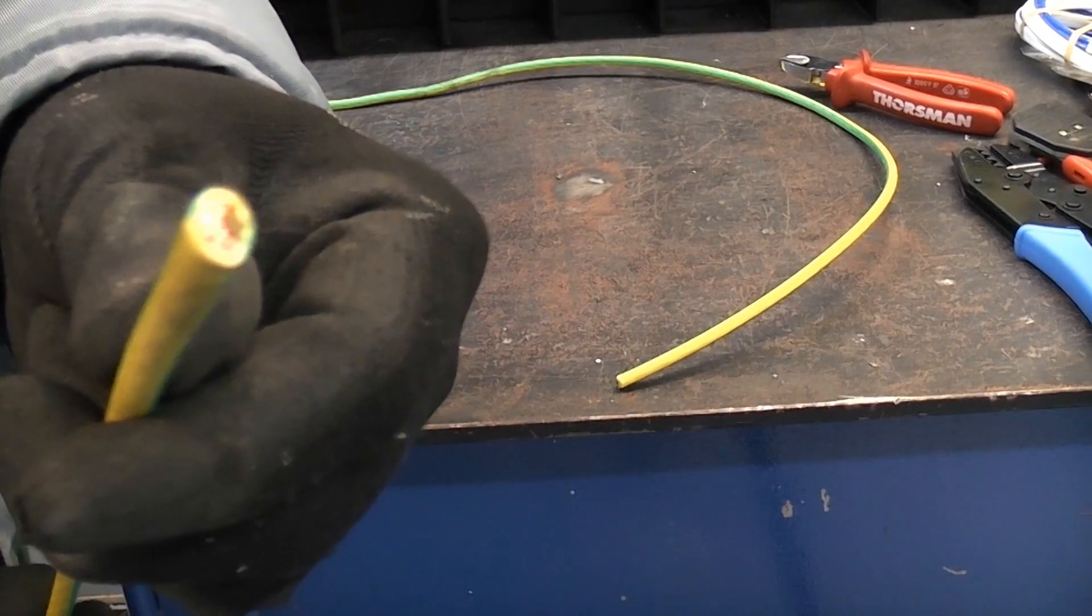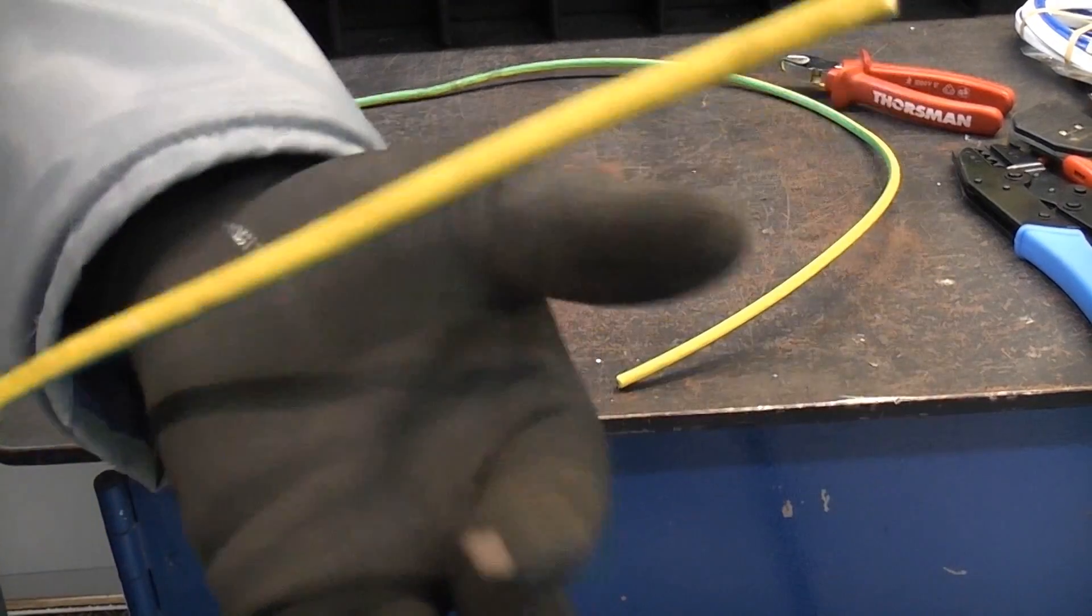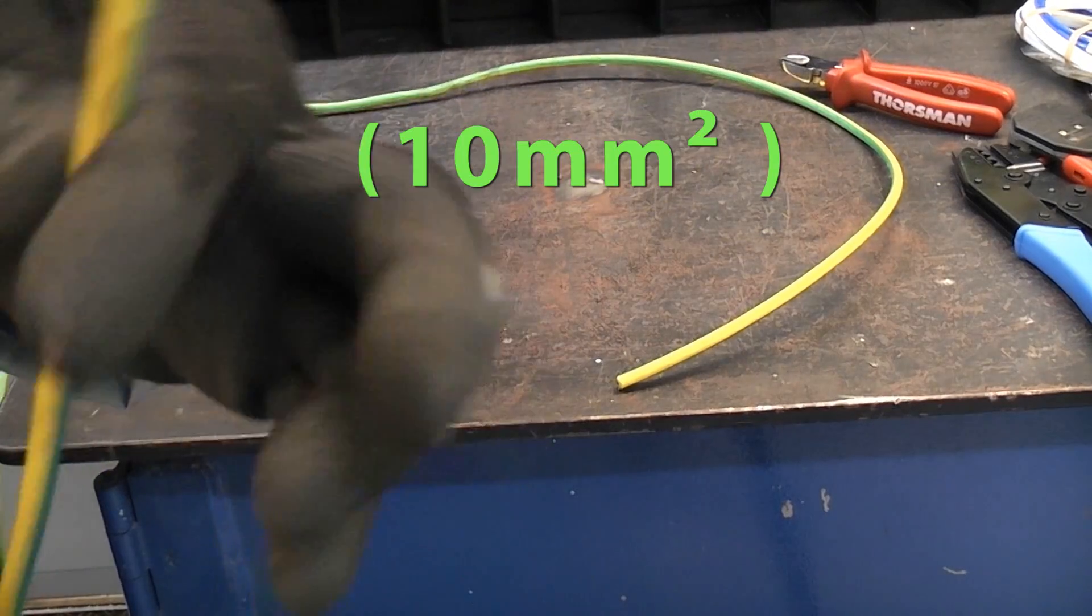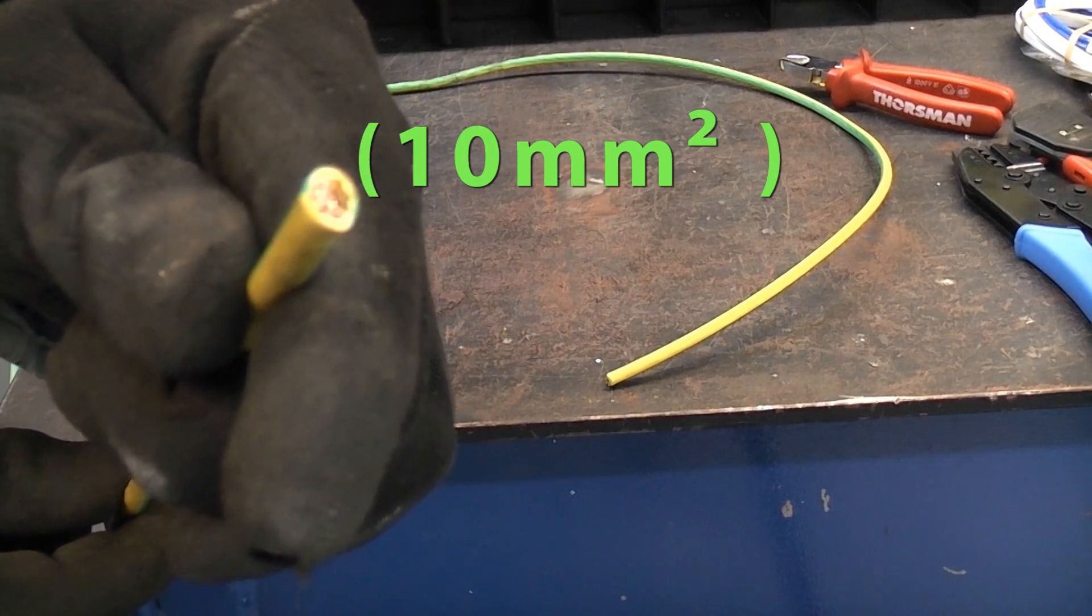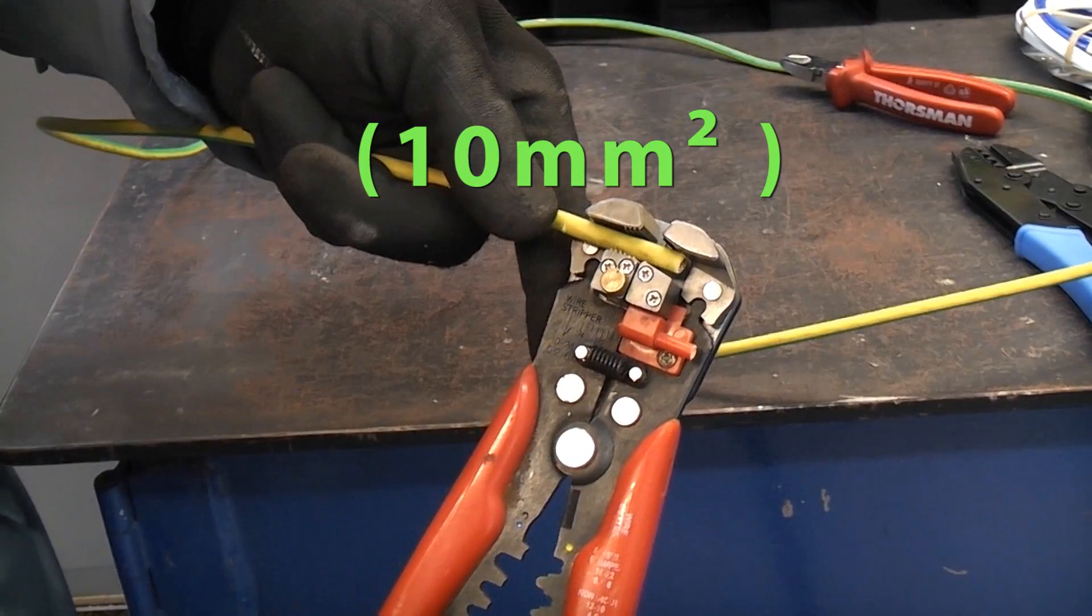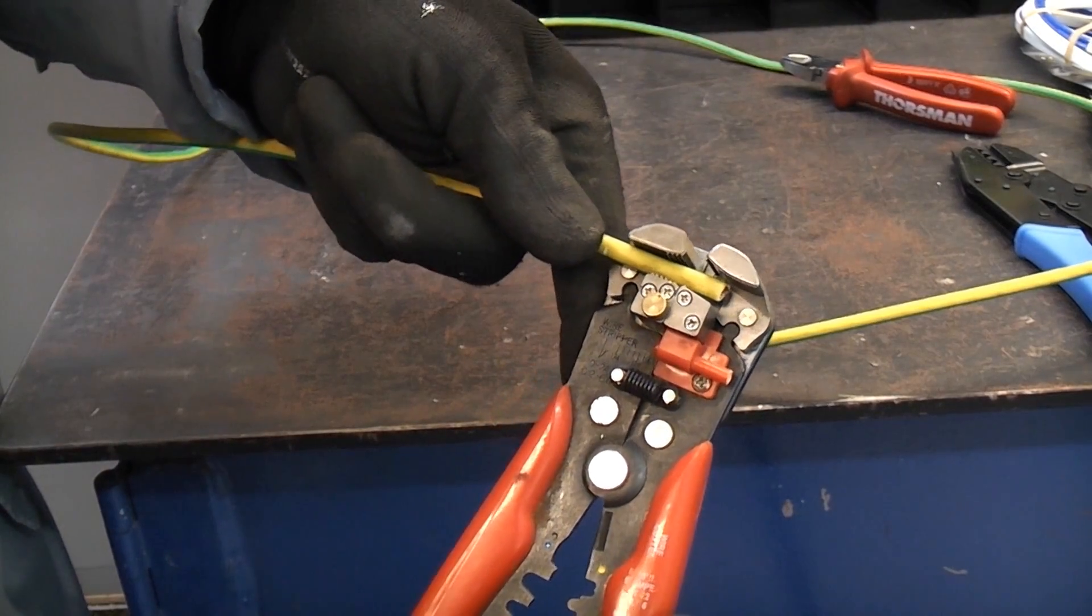The wire that we're going to be using for the earthing is obviously green and yellow in the UK, and that is 10mm. We're just going to start by stripping off some of the insulation.